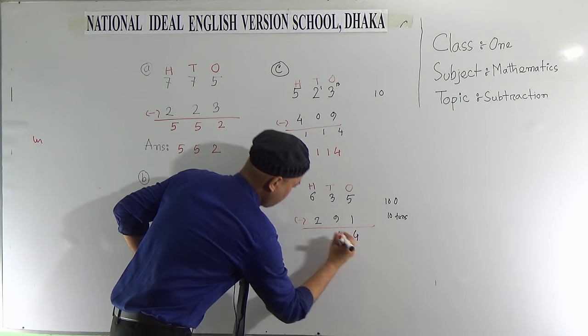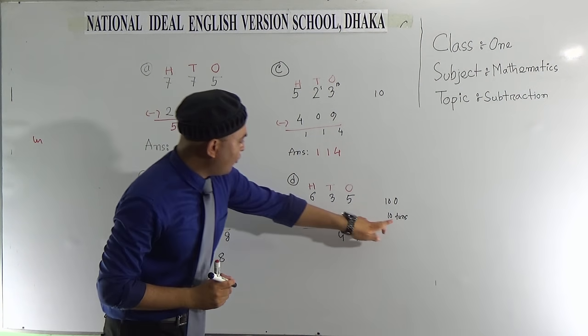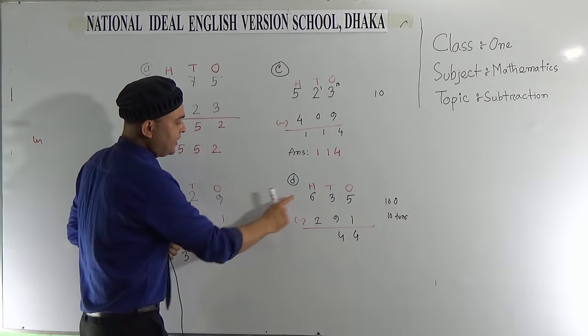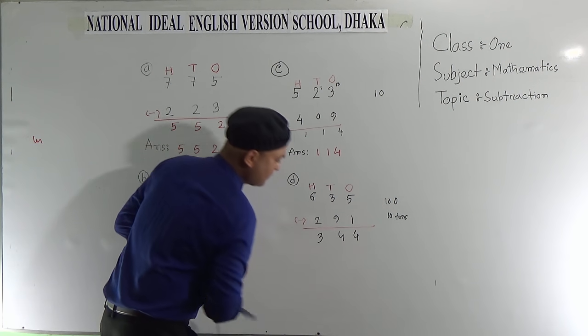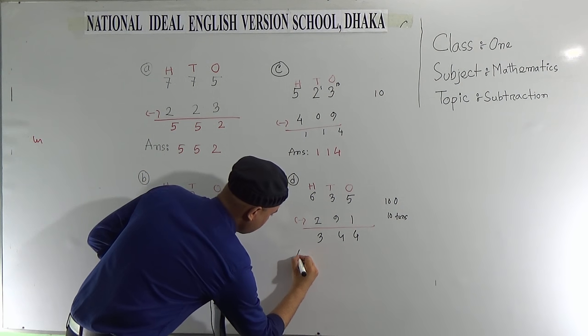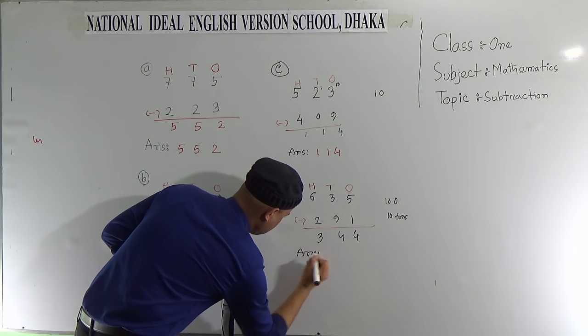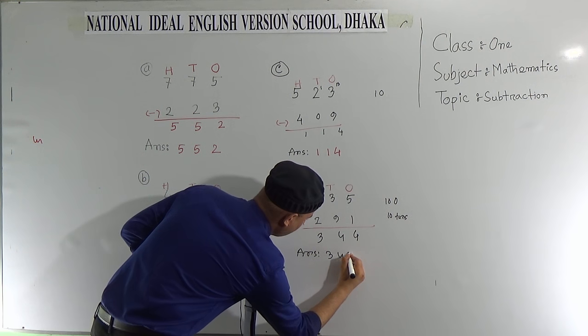Now subtract 9 from 13, it will be 4. And after taking 1 ten from 6, it will be 5. So subtract 2 from 5, it will be 3. So the answer is 344.